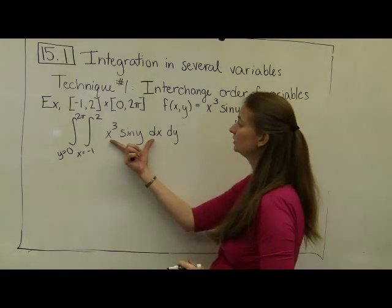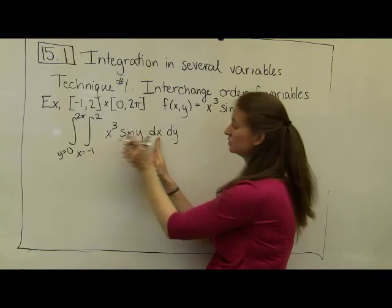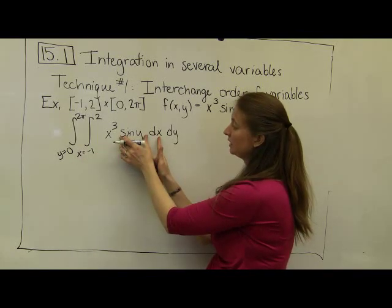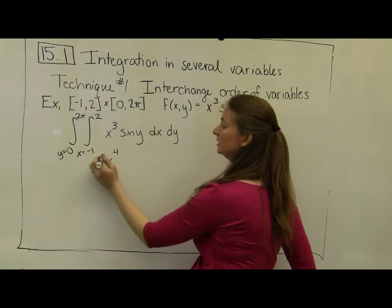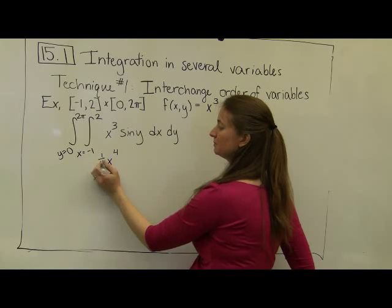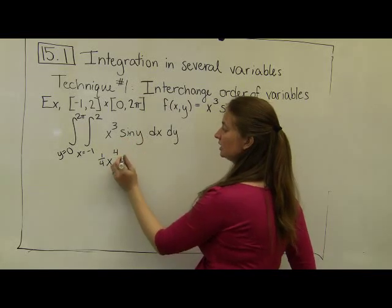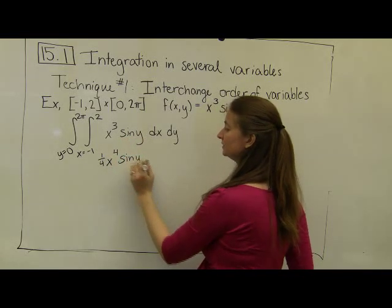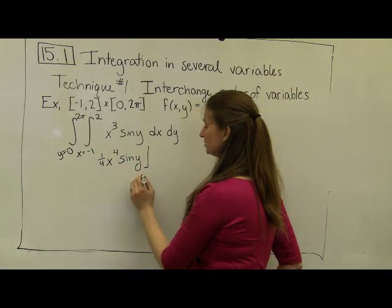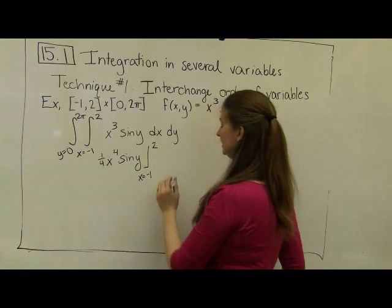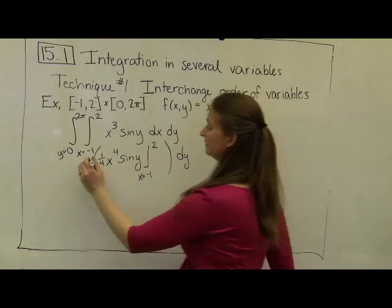In order to compute this integral, I'm going to start by taking the integral of the interior function. I'm taking an integral with respect to x, so I treat the sine of y as a constant. When I integrate this, I get x to the fourth power times one-fourth — that's the polynomial rule for integration, multiplying by the reciprocal of four. The sine of y is just a constant, so I bring it along. I evaluate this whole thing as x goes from negative one to two, and don't forget that we need to have our exterior integral because we haven't evaluated that.